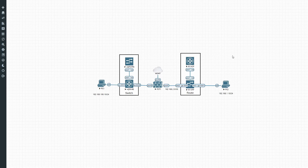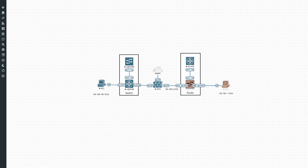In today's example we'll be setting up communication between PC1 and PC2. This lab consists of a few elements: a switching environment where PC1 plugs in via an access port, then a trunk interface from the switch towards the FortiGate firewall, and then a normal access interface from the FortiGate towards a router, with another directly connected interface between the router and PC2.